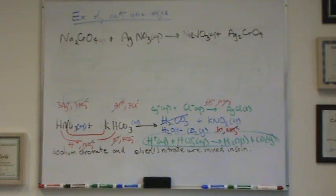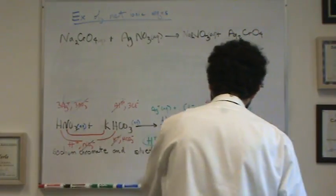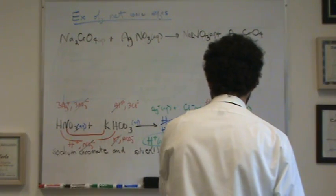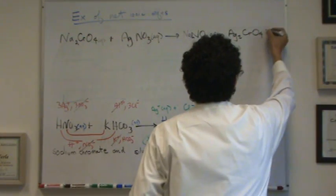So sodium nitrate must be aqueous. If you look on the solubility rules, however, for the last one, anything with a chromate, with a few exceptions, will be solid. And all those exceptions are in the solubility rules. But this one is going to be solid.